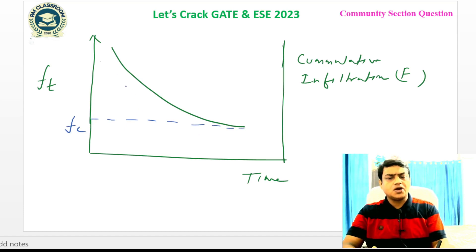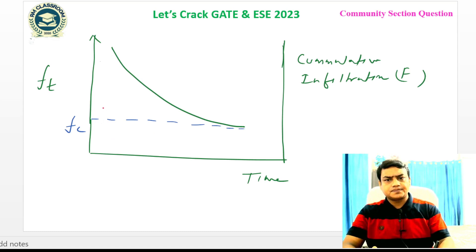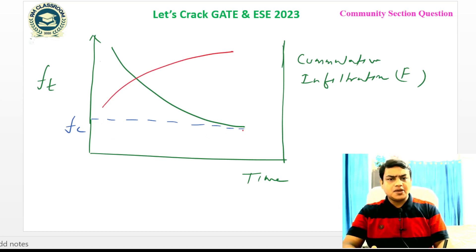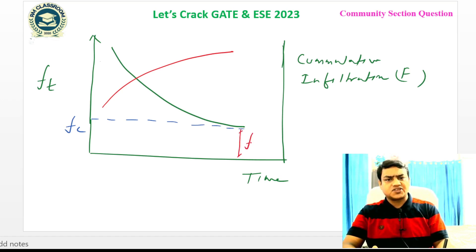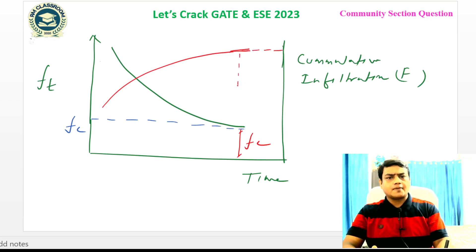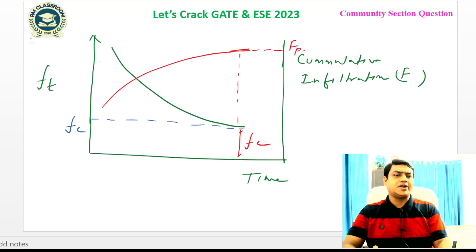The initial value on the curve corresponds to F0, the initial infiltration capacity. The second curve shows cumulative infiltration on the other axis, where the steady value corresponds to Fc, and the corresponding cumulative infiltration capacity at any time is also shown.